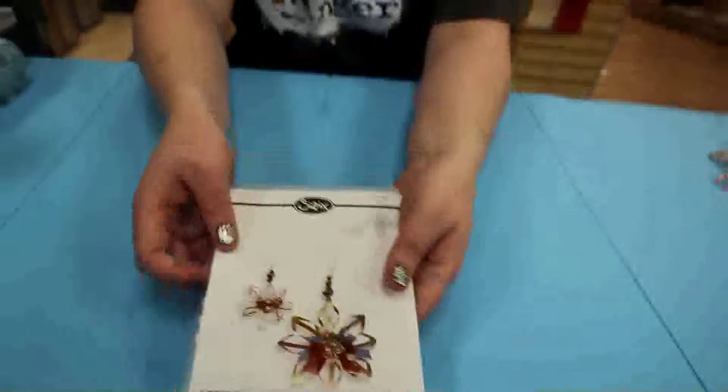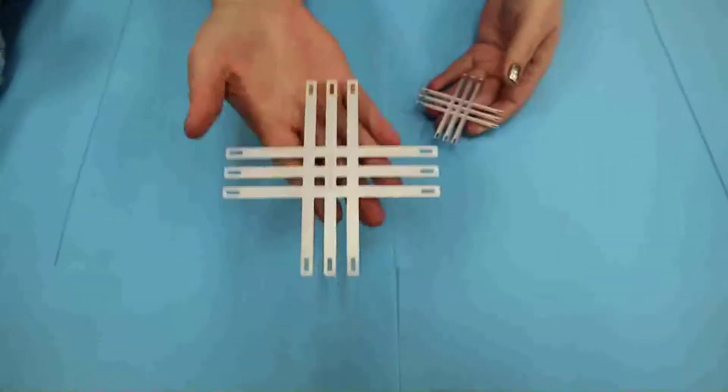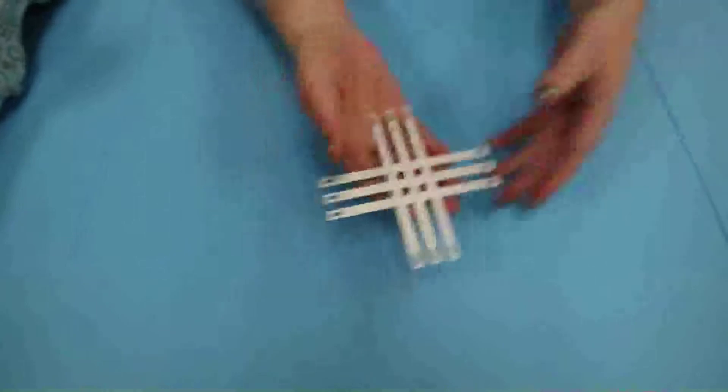In the package, you get two dies which makes stars of two different sizes. So we're going to focus on the bigger one today because I think that will be easier for you to see on camera.